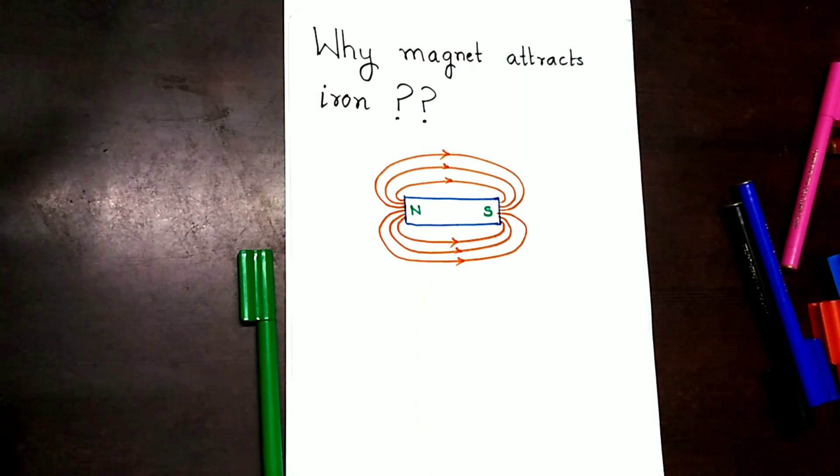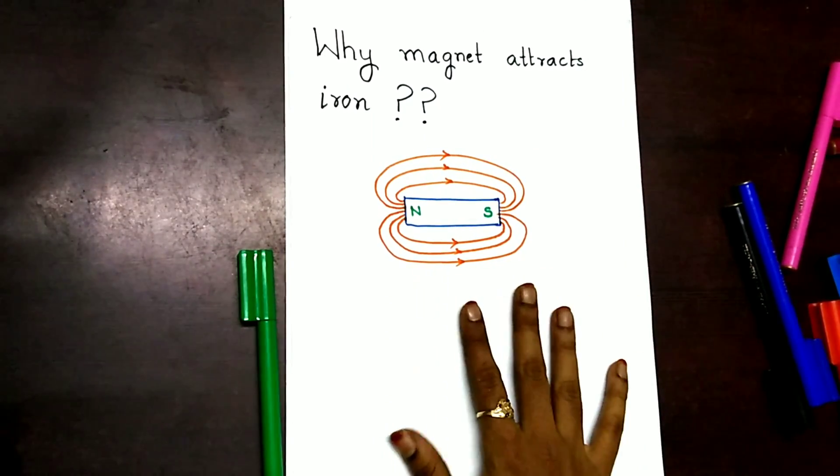Yes, we all know that magnet attracts iron. What is the reason behind it? What is actually happening in this process? Let's learn it. Before going to the main topic,